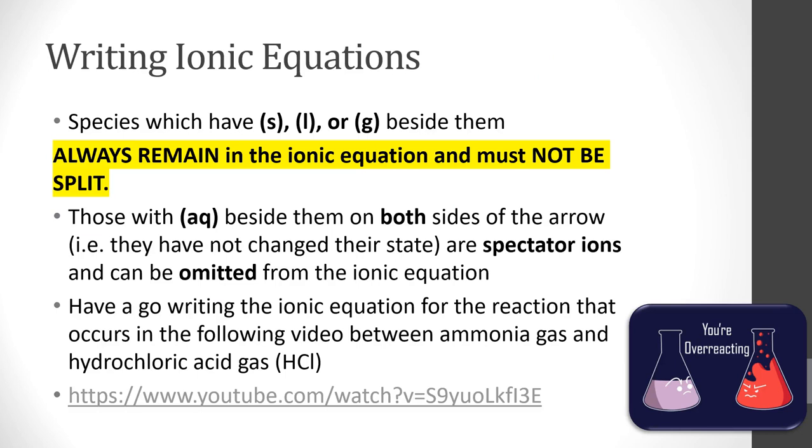There are a series of rules that we should follow when writing ionic equations. Species which have (s), (l), or (g) beside them always remain in the ionic equation, because generally these are not things that we're dealing with being ions. But if they have solid, liquid, or gas, they stay. And then it's really the ones that are aqueous that we're thinking about. With precipitation double displacement reactions, we start with two aqueous solutions. So it is the ions that remain as aqueous ions that we remove.